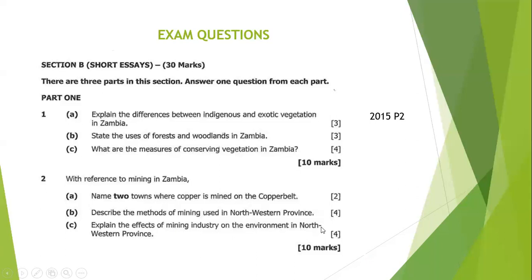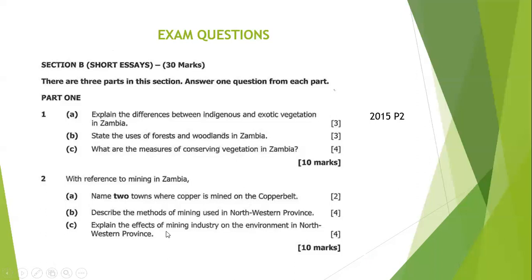Part C asks: explain the effects of the mining industry on the environment in Northwestern Province. One effect is deforestation — areas where mines are set up were once endowed with vegetation but now have none. Another effect is displacement of people and wildlife from those areas. Pollution is also a major effect — massive land pollution, air pollution, and noise pollution are all experienced by people living near these mines.